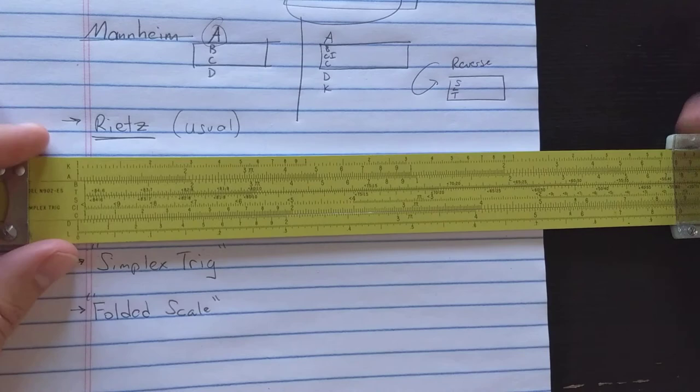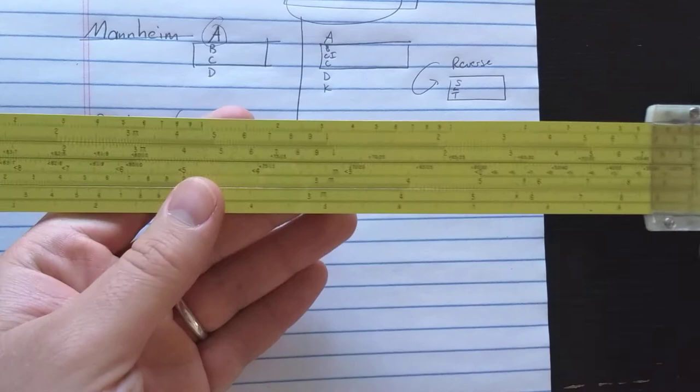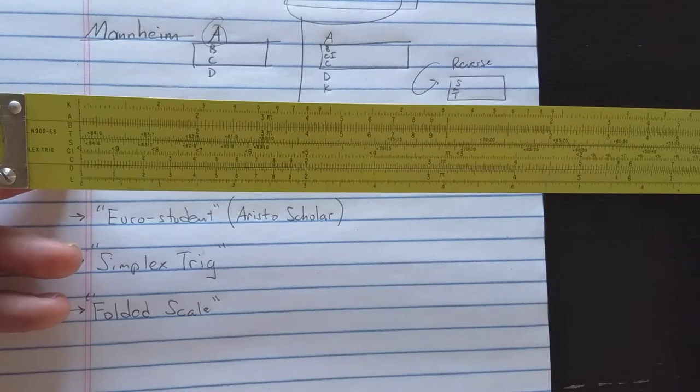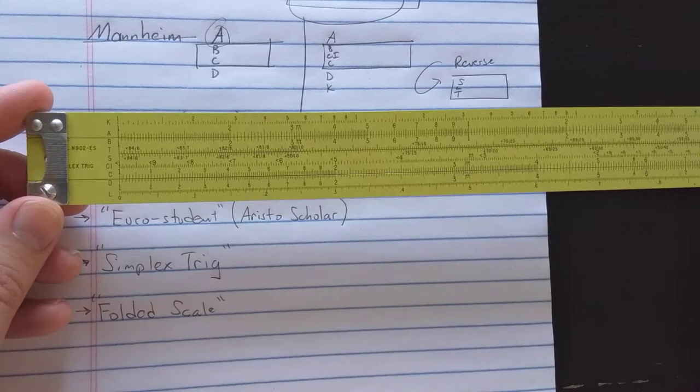So, Pickett adds a mark here on the C scale for conversion to radians, and that mark can be used essentially as the index of the ST scale. And then you can use C as the ST scale. So you can have essentially the function of the ST scale without kind of refiguring your trig solutions or actually having the ST scale. So this is one of my favorite layouts.